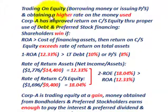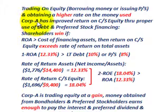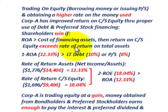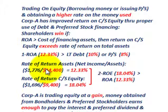Trading on equity means borrowing money or issuing preferred stock and obtaining a higher rate on the money used. Corporation A has improved their return on common stock equity through proper use of debt and preferred stock financing. Shareholders win when the return on assets is greater than the cost of financing the assets — then the return on common stock equity exceeds the rate of return on total assets. Our return on assets is calculated at 12.33%.